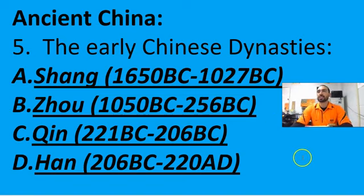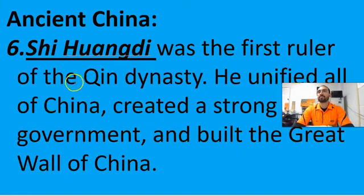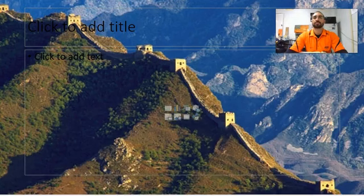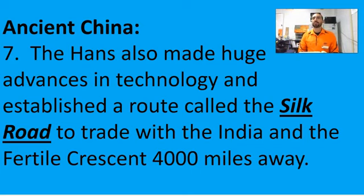The early Chinese dynasties of the historic period are the Shang from 1650 to 1027, the Zhou 1050 to 256, the Qin 221 to 206, and the Han 206 to 220. It was under the Qin Dynasty that Shi Huangdi, the Qin Emperor, unified all of China. He created a strong government and built the Great Wall of China. The Han also made huge advances in technology and established a trade route called the Silk Road to trade with India and the Fertile Crescent more than 4,000 miles away.